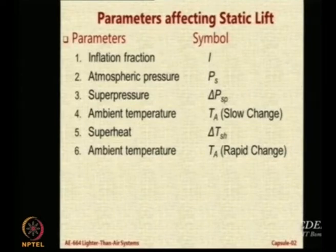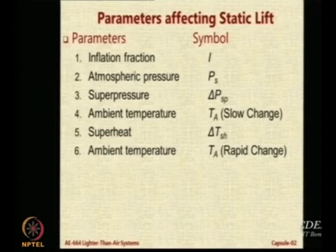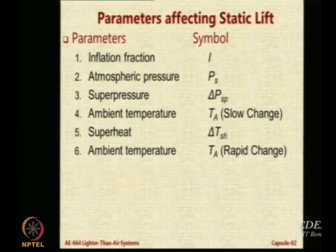Super pressure essentially represents the pressure in the envelope which is more than atmospheric, to maintain the shape. This also we saw — you can model it as a change in pressure or change in super pressure; the formulas are very similar. Ambient temperature can change either slowly, allowing thermal equilibrium to happen between the outside air and the inside system, in which case there is no net static lift gain. But if we do a rapid change in ambient temperature, the system does not get time to respond, and hence there is a change in the static lift.